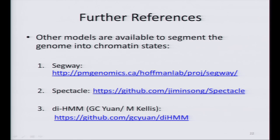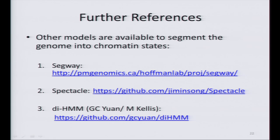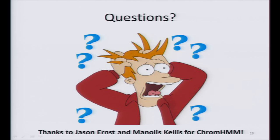I just want to finish with these references. ChromHMM is not the only model to do this. There is Segway, another model that gives single base-pair resolution, though it is a little bit slower than ChromHMM. There is a new method called Spectacle, similar to ChromHMM but much faster because it uses spectral learning. And in our lab, in collaboration with Manolis, we are developing an extension of ChromHMM that solves the resolution problem — you can learn chromatin states simultaneously at different resolutions, from nucleosome resolution to domain resolution. I want to thank Manolis and Jason for this nice tool.